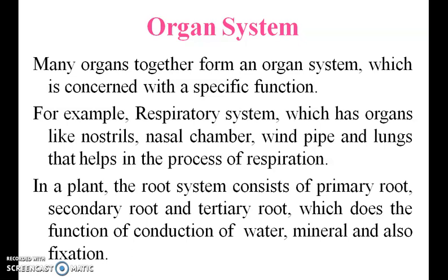For example, the respiratory system has organs like the nostril, windpipe, and lungs, which help the process of respiration. Similarly, in a plant, the root system consists of the primary root, secondary root, and tertiary root, which carry out the function of conduction of water, minerals, and also fixation.